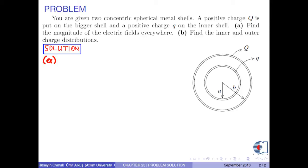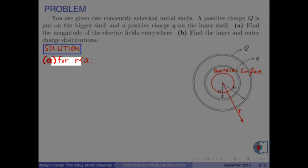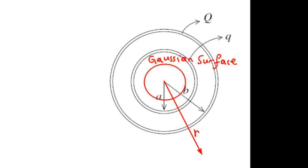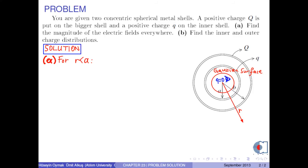If we draw the radial distance R measured from the center, for the region where R is less than A, if we draw the Gaussian surface enclosing this region and look inside, we see no charge. Therefore, the electric field in this region becomes zero.